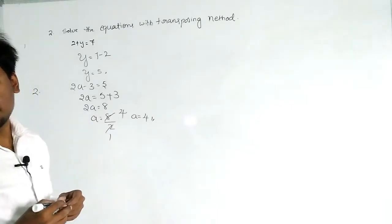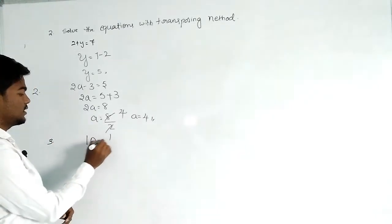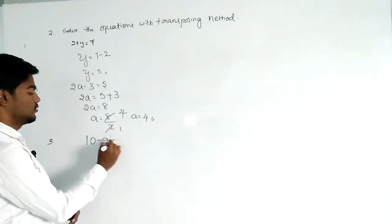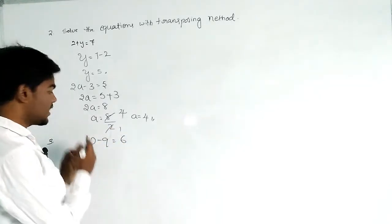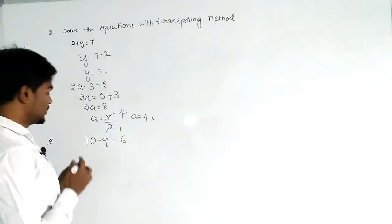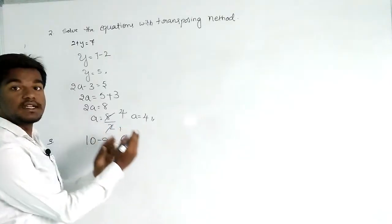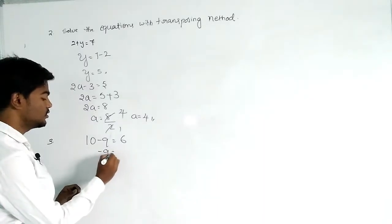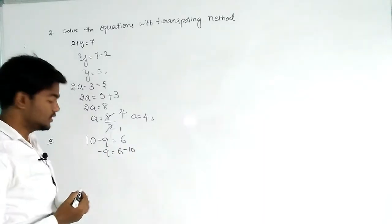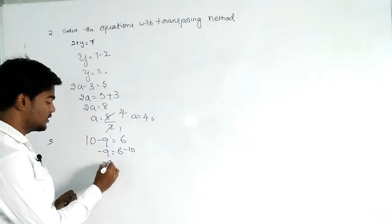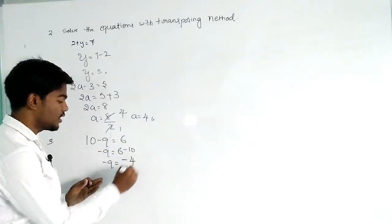Our third question is 10 - q = 6. Here we shift 10 to the right side, giving minus q = 6 - 10.